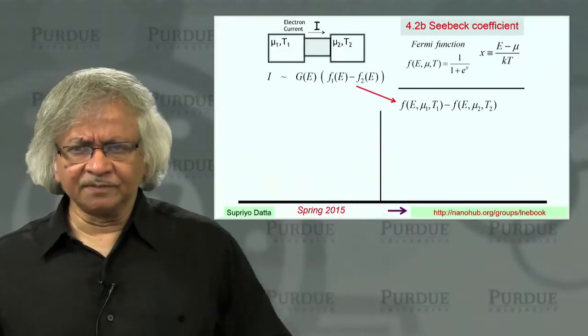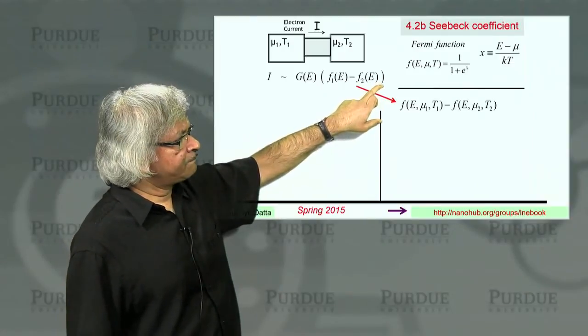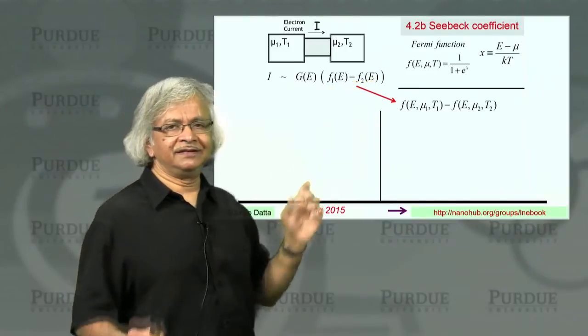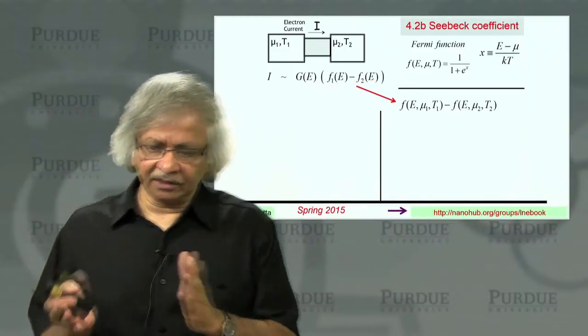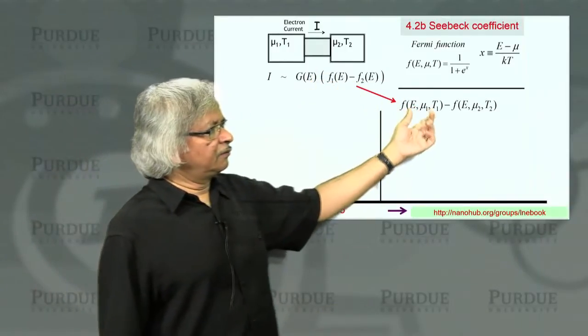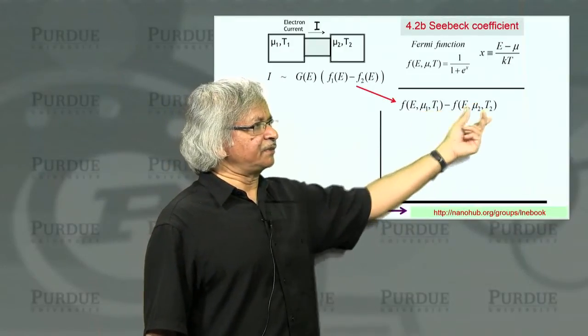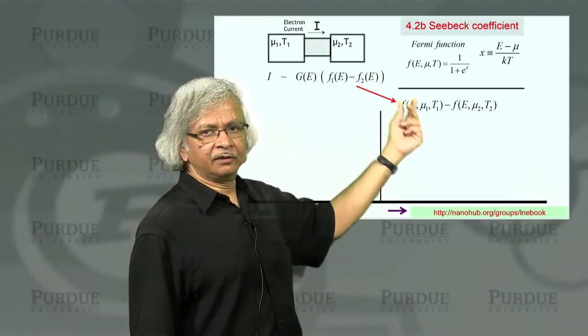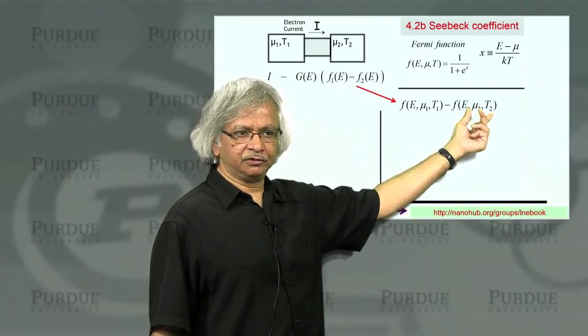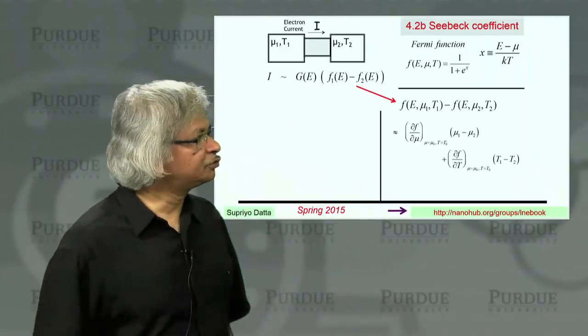Now let's do this mathematically. So if you remember, when we were talking about conductance, we took this F1 minus F2 and did this Taylor series expansion to get the conductance for low bias. We can do a similar thing now where we allow both the chemical potential to vary as well as the temperature.